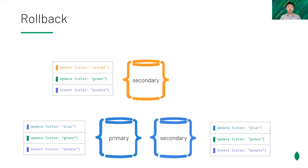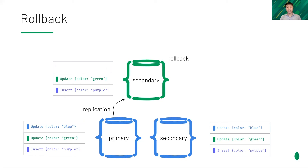Let's imagine a different scenario. If, for some reason, the orange update didn't commit successfully, after a failover a blue update commits. The diverged node needs to truncate the orange update and revert its effect to the database.